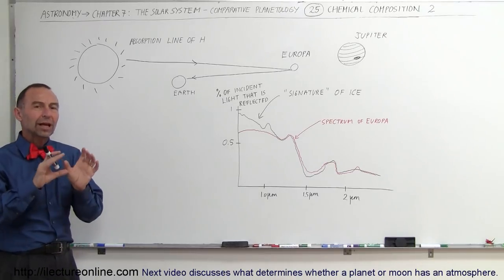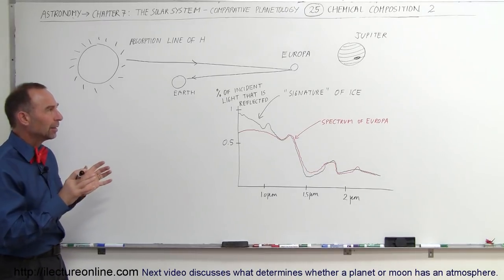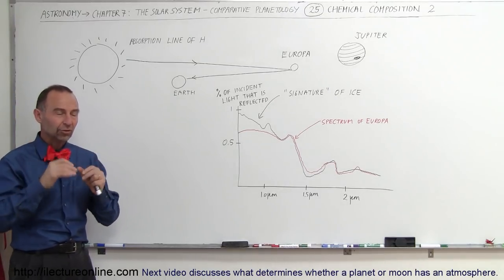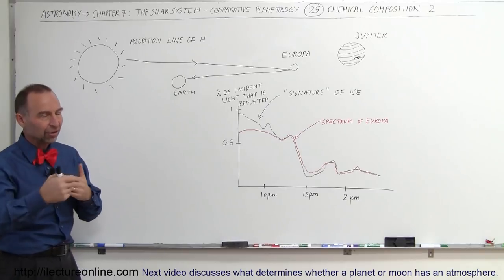How do we know that Europa is primarily covered by ice? Well, one of the things we can find is that when we take close-up pictures of Europa with satellites that have traveled there,